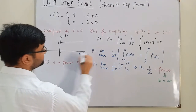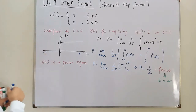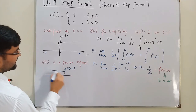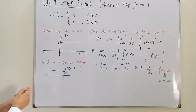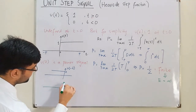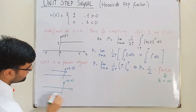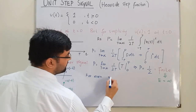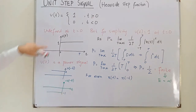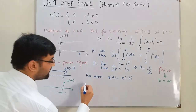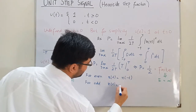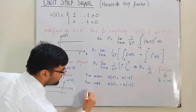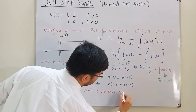Next, let's check whether u(t) is even or odd. For an even signal, x(t) = x(-t). Comparing u(t) and u(-t), they are not equal, so u(t) is not an even signal. For an odd signal, x(t) = -x(-t). Comparing u(t) and -u(-t), they are also not equal. Therefore, u(t) is neither an even nor an odd signal.